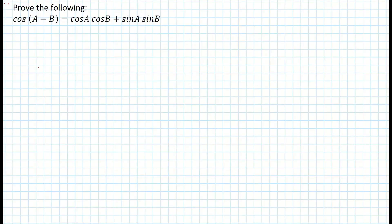Prove the following: cos(A minus B) is equal to cos A times cos B plus sin A sin B. In order to answer this, we're going to need our knowledge of the unit circle.